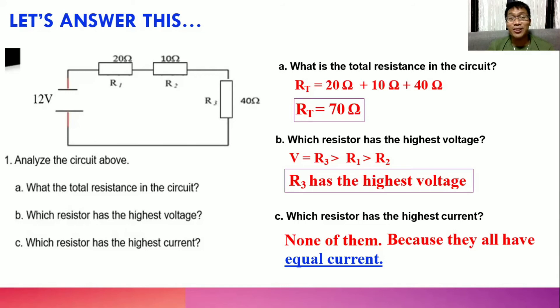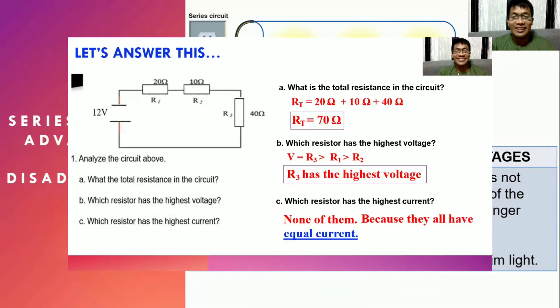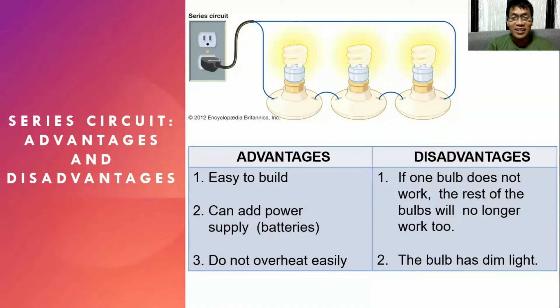With that, let us proceed to the advantages and disadvantages of series connection. The advantages of a series circuit are the following. First, easy to build, because you will just form a single loop. So it is very easy to assemble.